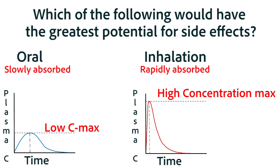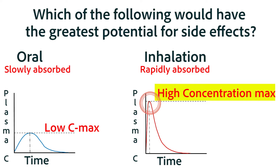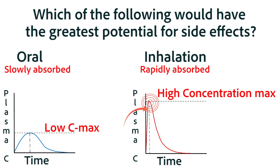Looking at the graph of the concentration max between the different modes of administration, which do you think would have a greater potential for side effects? You were correct if you said there was a greater risk of overdose and side effects with the types of administration that allow the medication to enter systemic circulation the fastest.